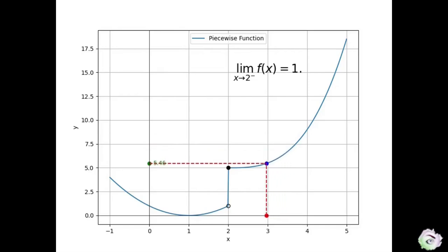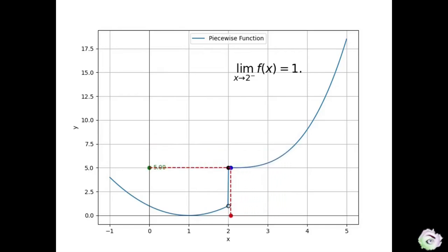Therefore, we conclude that the right limit of f at 2 is 5. We denote it by symbols as: lim as x approaches 2 from the right of f of x equals 5.